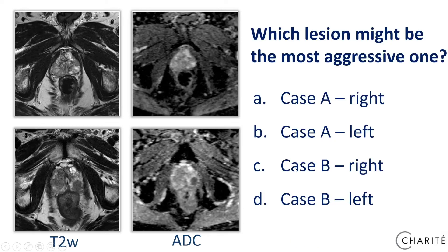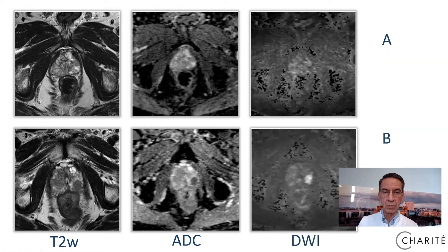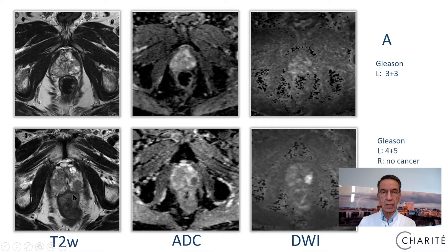My question to you is: which might be the most aggressive lesion in these two patients — patient A on the right or left-hand side, or patient B on the right or left-hand side? I'm pretty sure you already made the correct diagnosis. In patient A, this was a low-grade prostate cancer, Gleason 3 plus 3, and the other area was chronic prostatitis. In patient B, this is a highly aggressive tumor Gleason 4 plus 5, and the other area was no cancer.